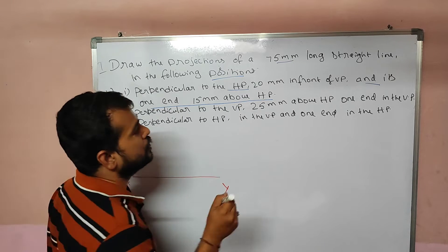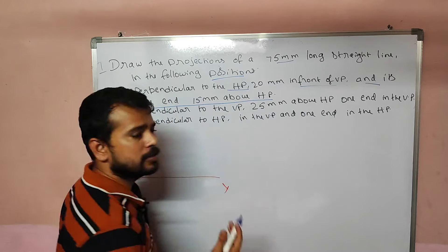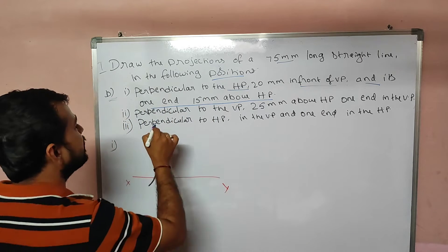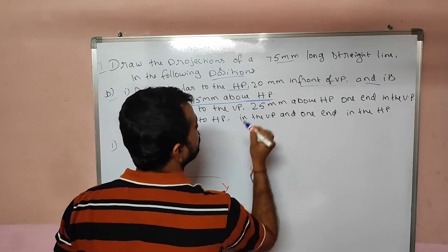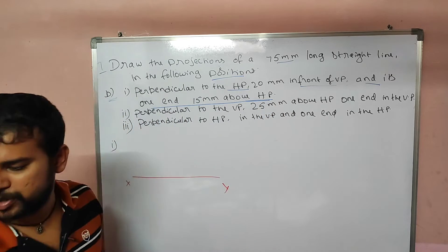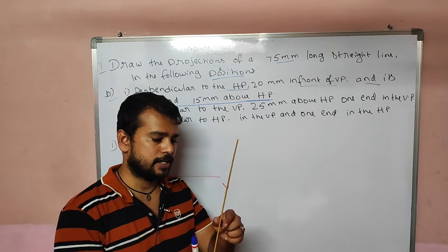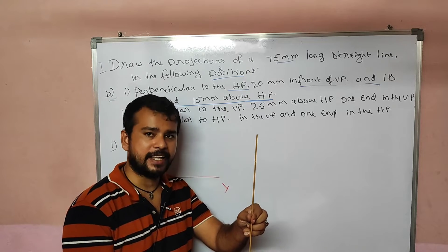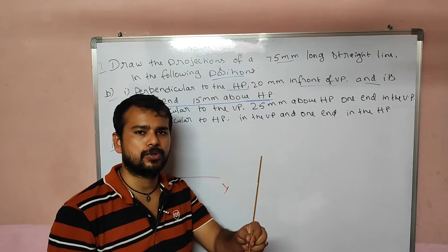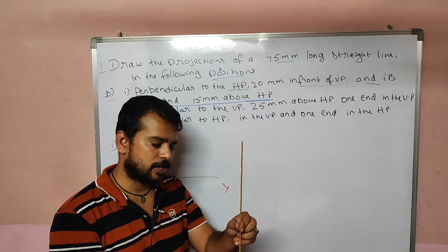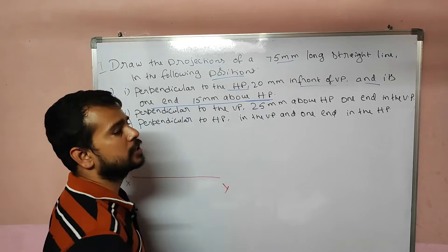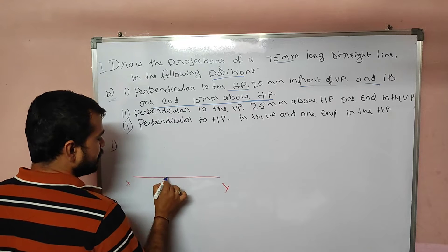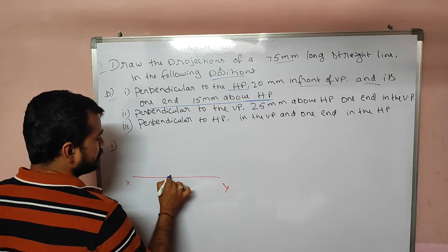Perpendicular to HP, 20mm in front of VP. VP is at 20mm. And its one end is 15mm above HP. One end is 15mm above HP — it's a point in front view, two ends are perpendicular. Whatever it may be, if it's a point in front view, it's 15mm. So we can see the point in front view.